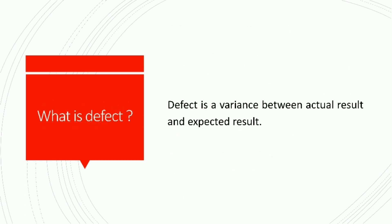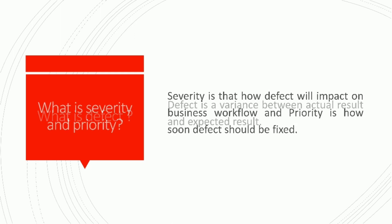What is a defect? A defect is a variance between actual result and expected result. What is severity and priority? Severity is how a defect will impact on the business workflow, and priority is how soon the defect should be fixed.